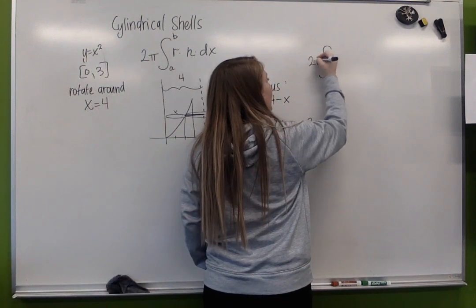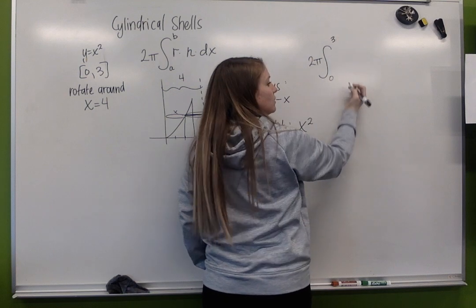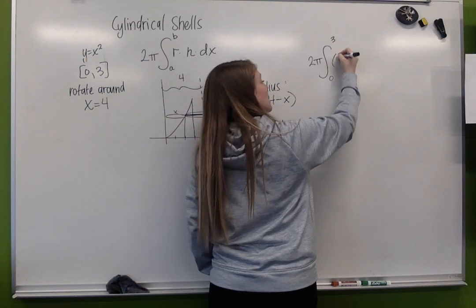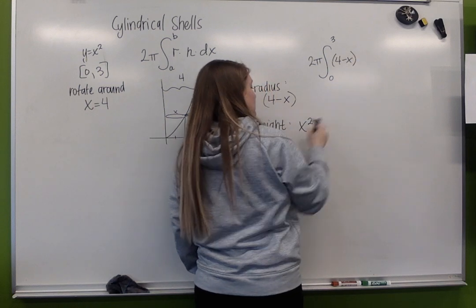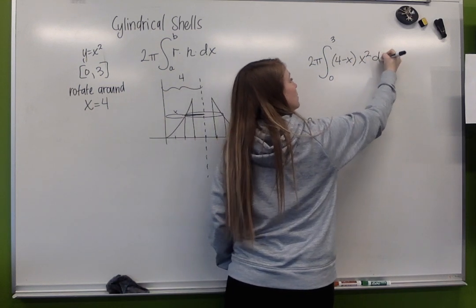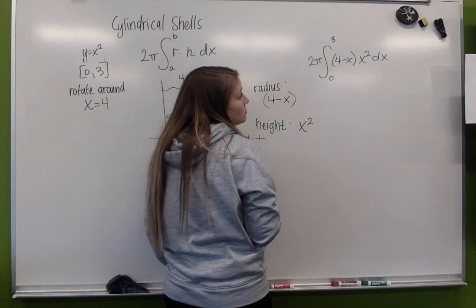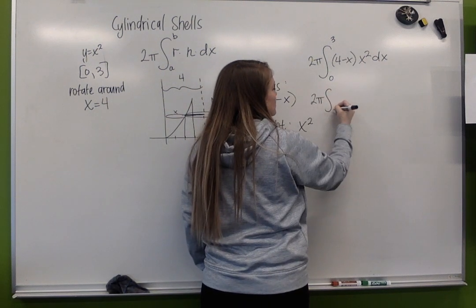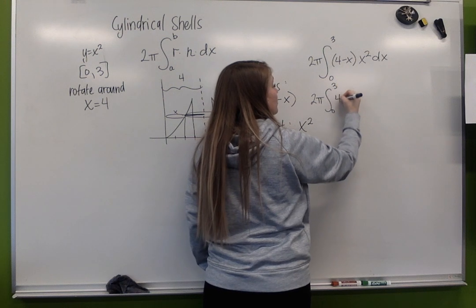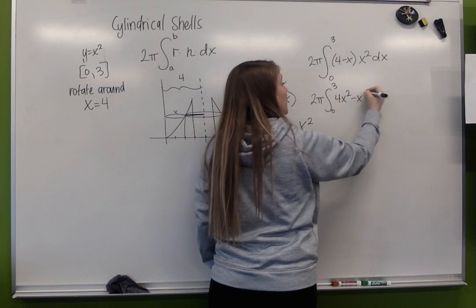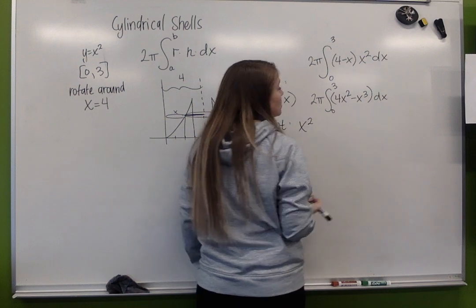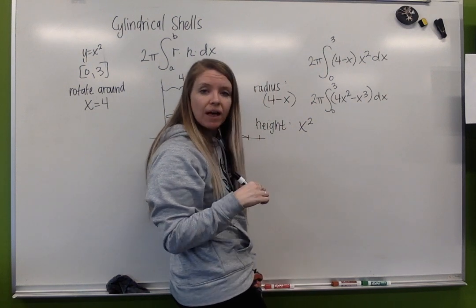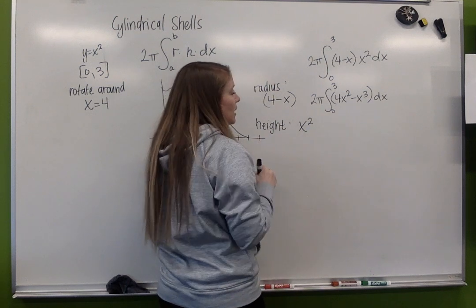So 2 pi from 0 to 3. My radius, which is 4 minus x, times my height, which is x squared dx. So I'm going to distribute. So 0 to 3, 4 x squared minus x cubed dx. Now I'm ready to integrate. I'm going to evaluate this expression.